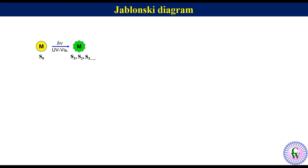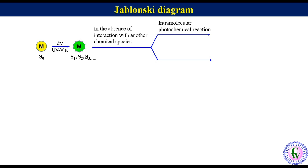In the absence of interaction with another chemical species it can undergo two things. Intramolecular photochemical reaction to produce different molecules or it can change into different electronic state of the same molecule.